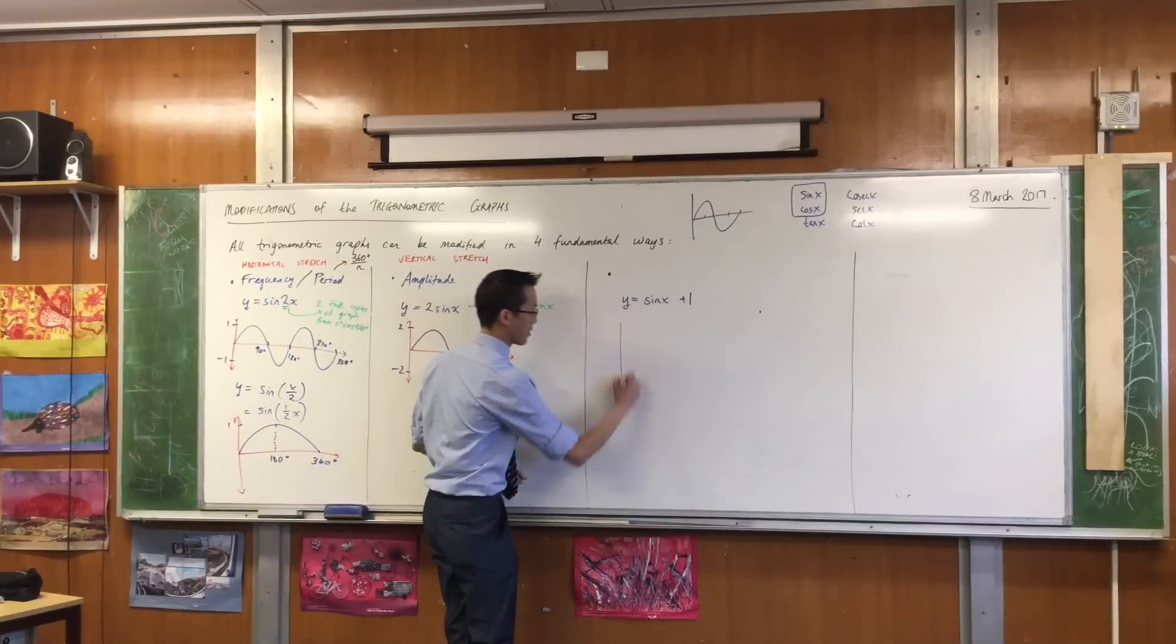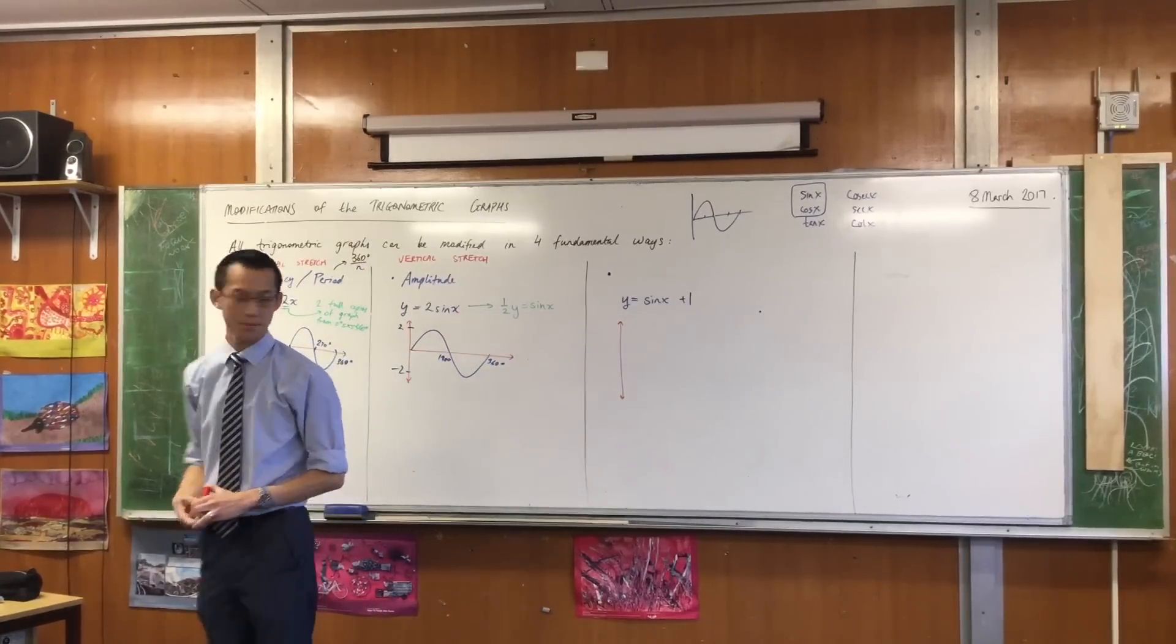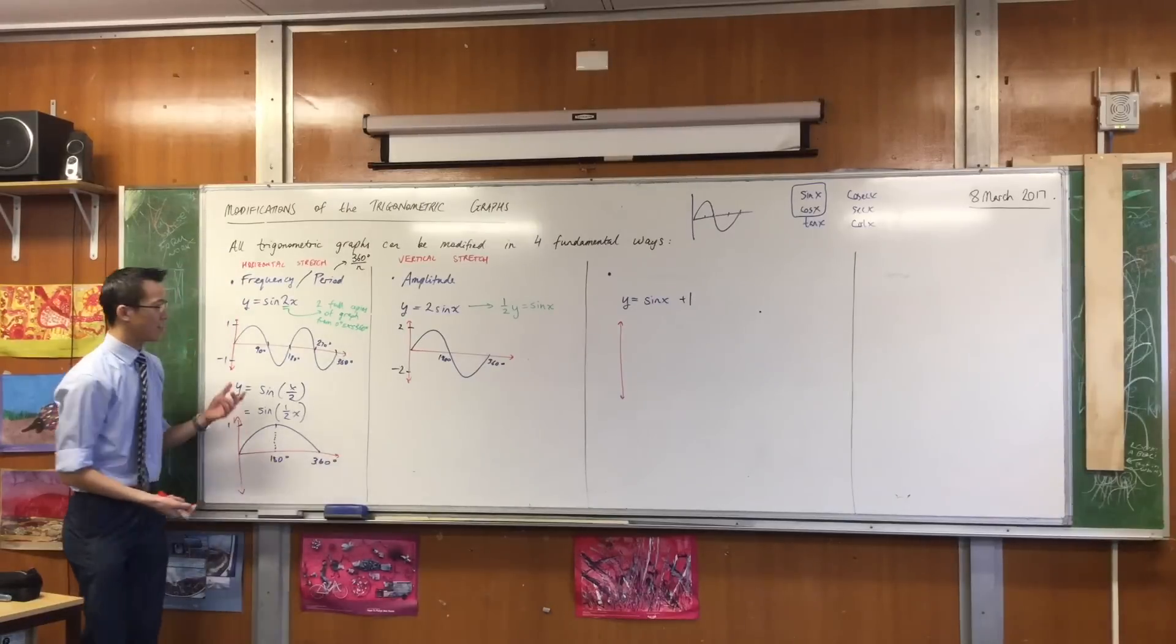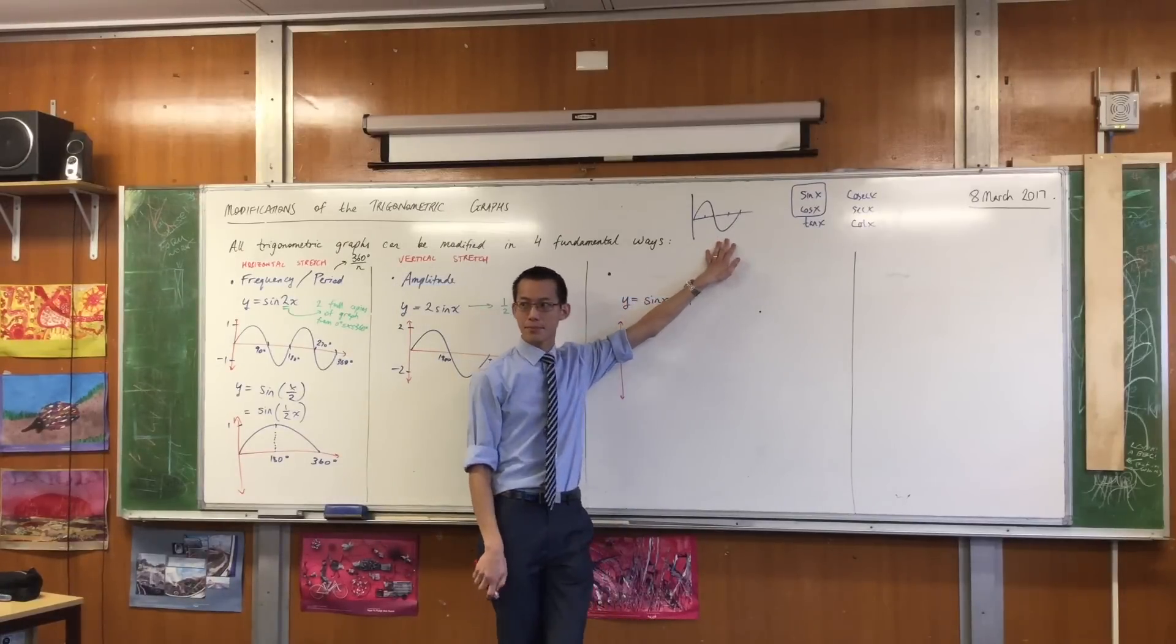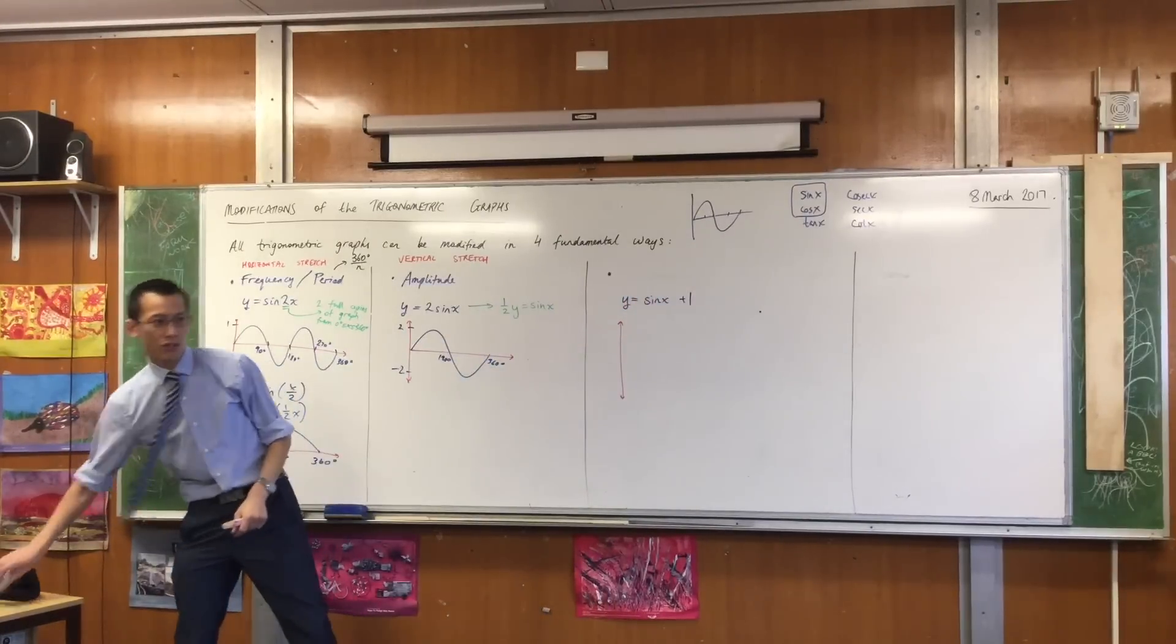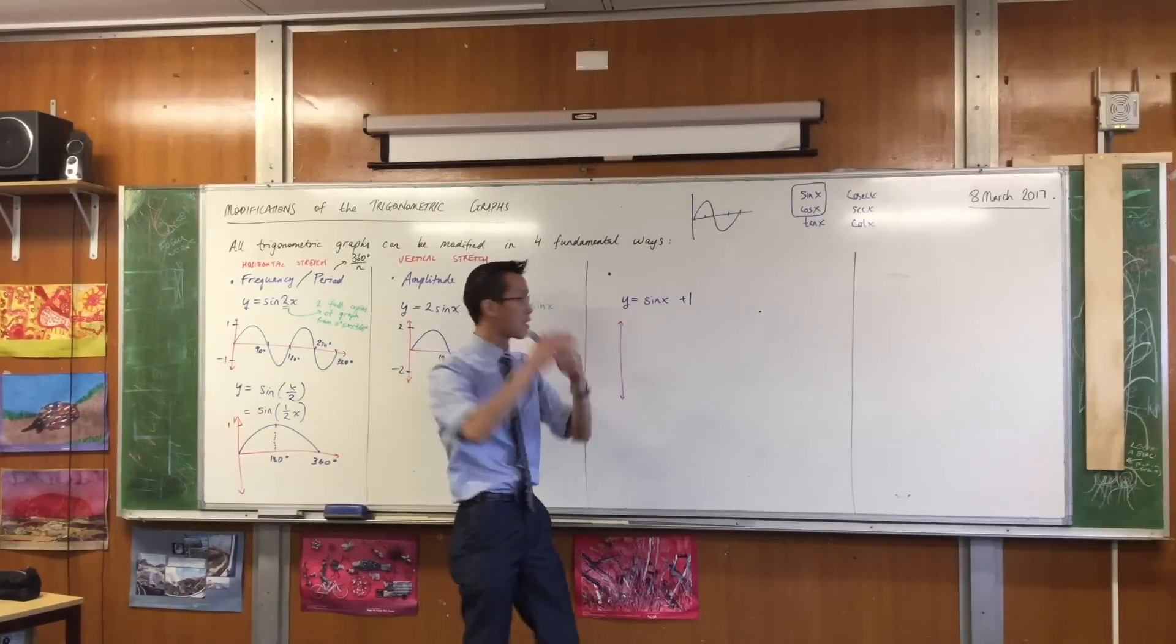Now, I'm going to first think about this in terms of range. What's the range of the original sine function? The original sine function goes between negative one and one. That's the lowest it can go, and that's the highest it can go.